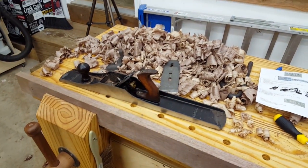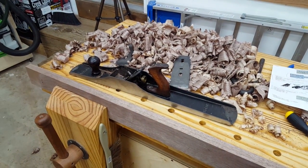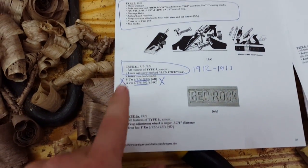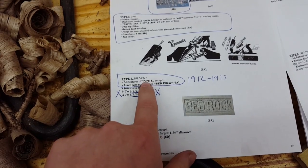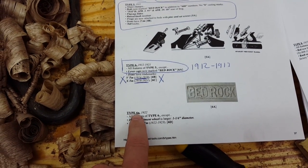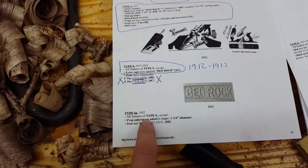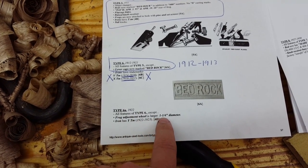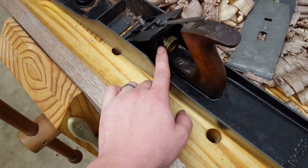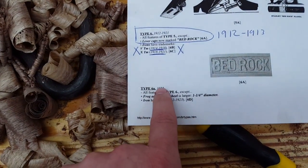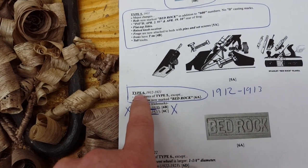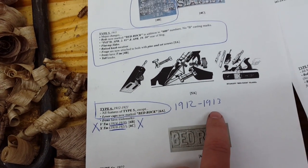I don't see any other changes in this documentation that would suggest - oh yes, yes, yes, it has to stop at this one. It cannot be a type 6a in 1922 because the frog adjustment wheel is larger at one and one quarter of an inch in diameter, and this one is not. This one is one inch in diameter, so it's definitely not from 22. So it is a, I'm guessing, a type 6 from 1912 to 1913.